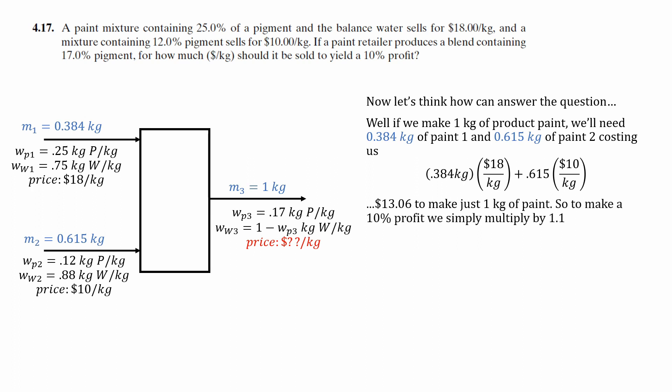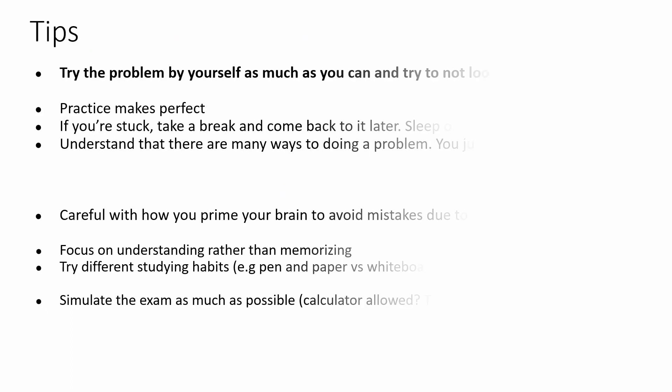So to yield 10% profit, we need to multiply by 1.1. Why 1.1? Because that's going to be 110% or 10% profit. And the price is going to be $14.37 per kilogram. And that is our answer.